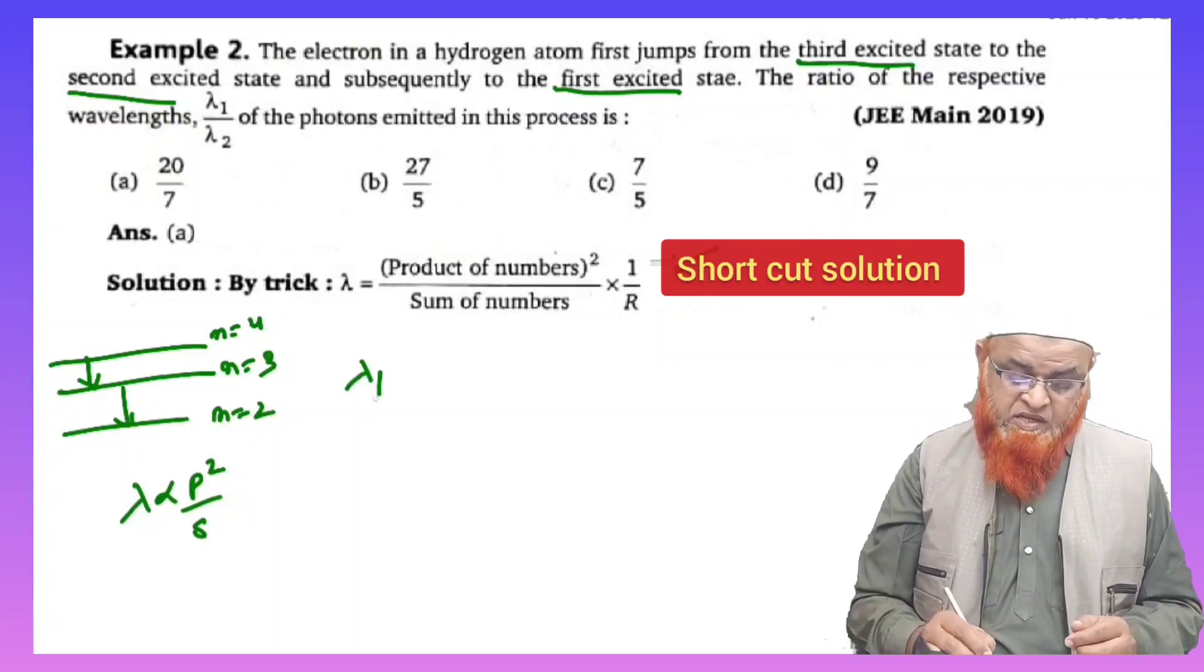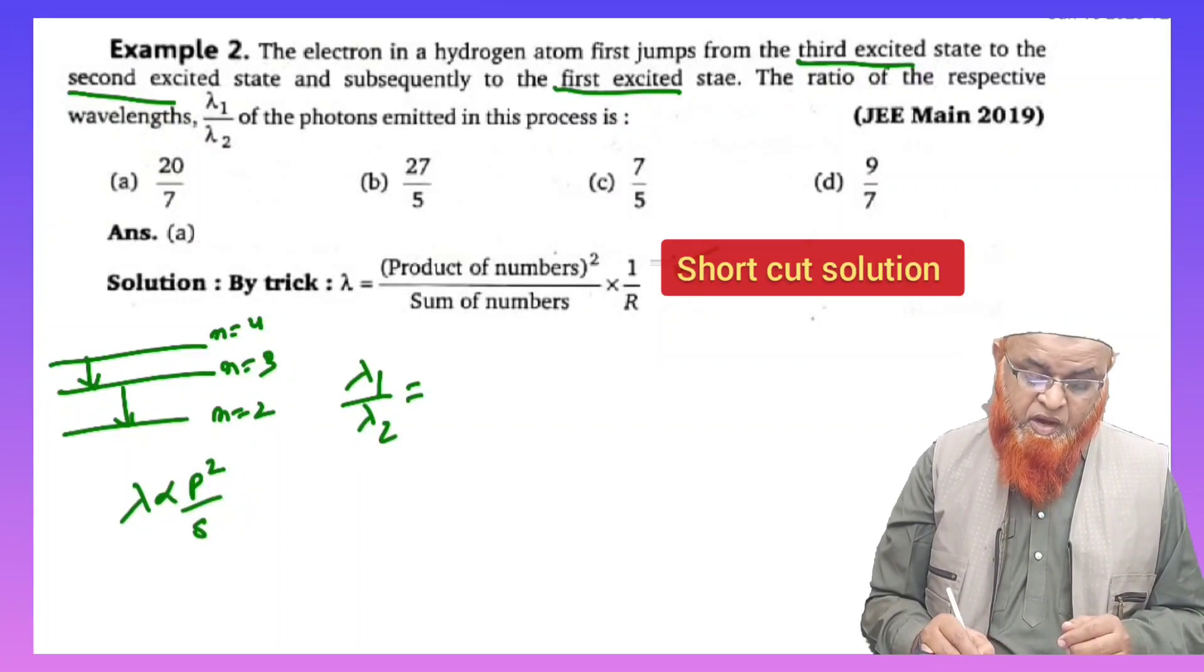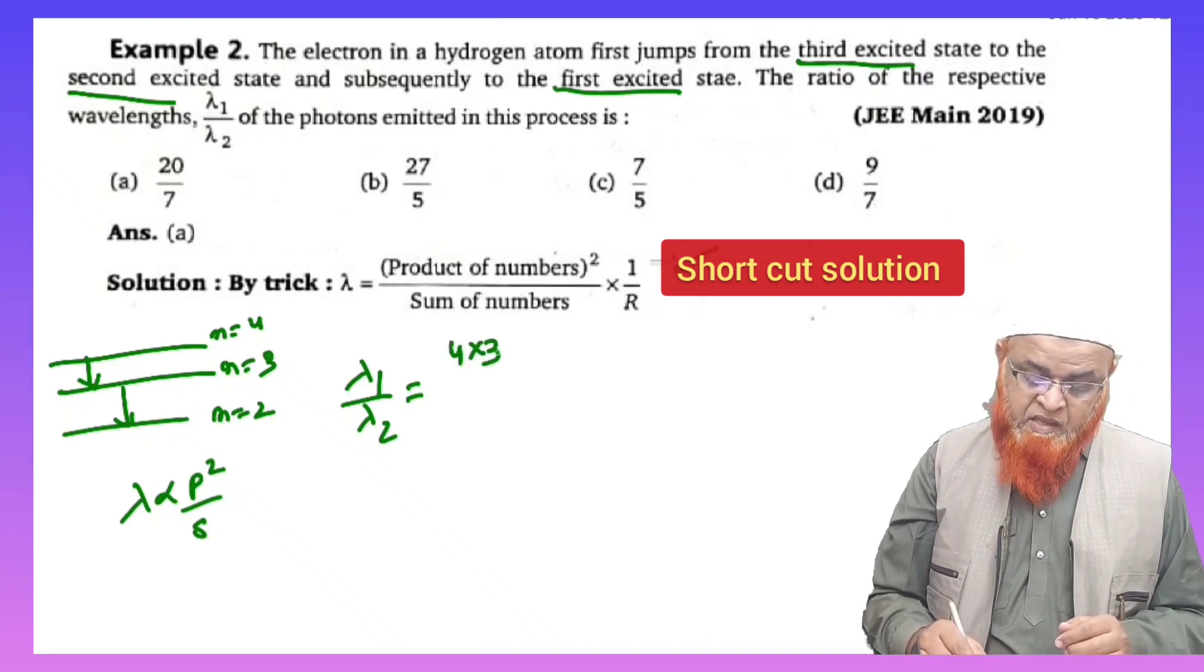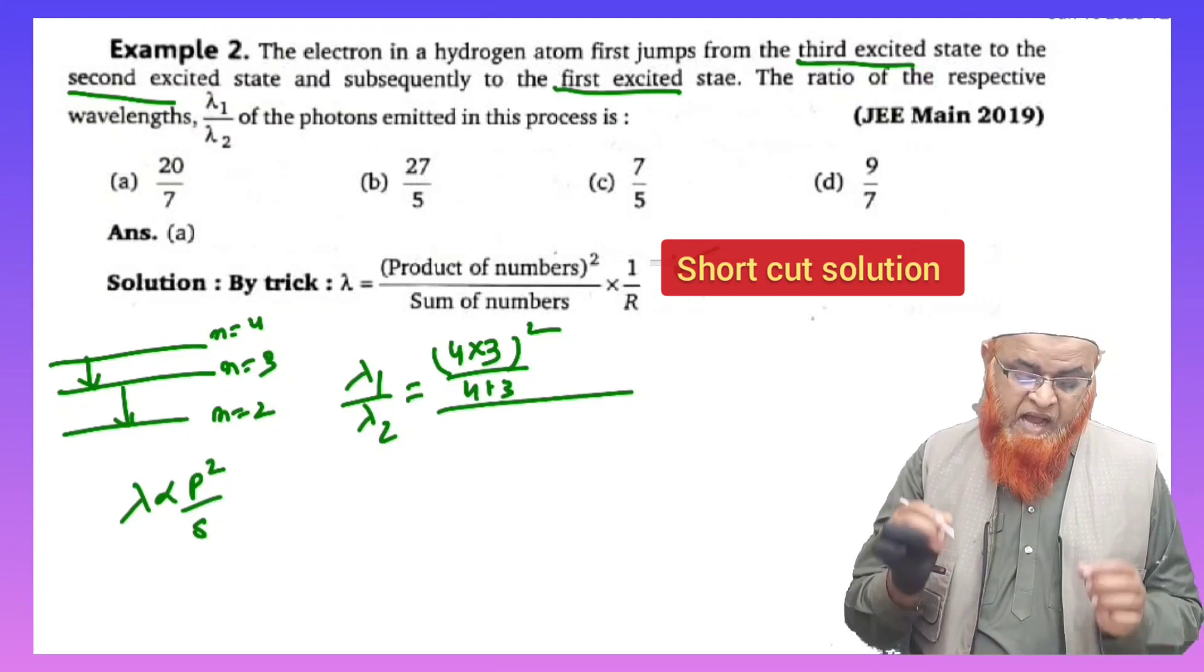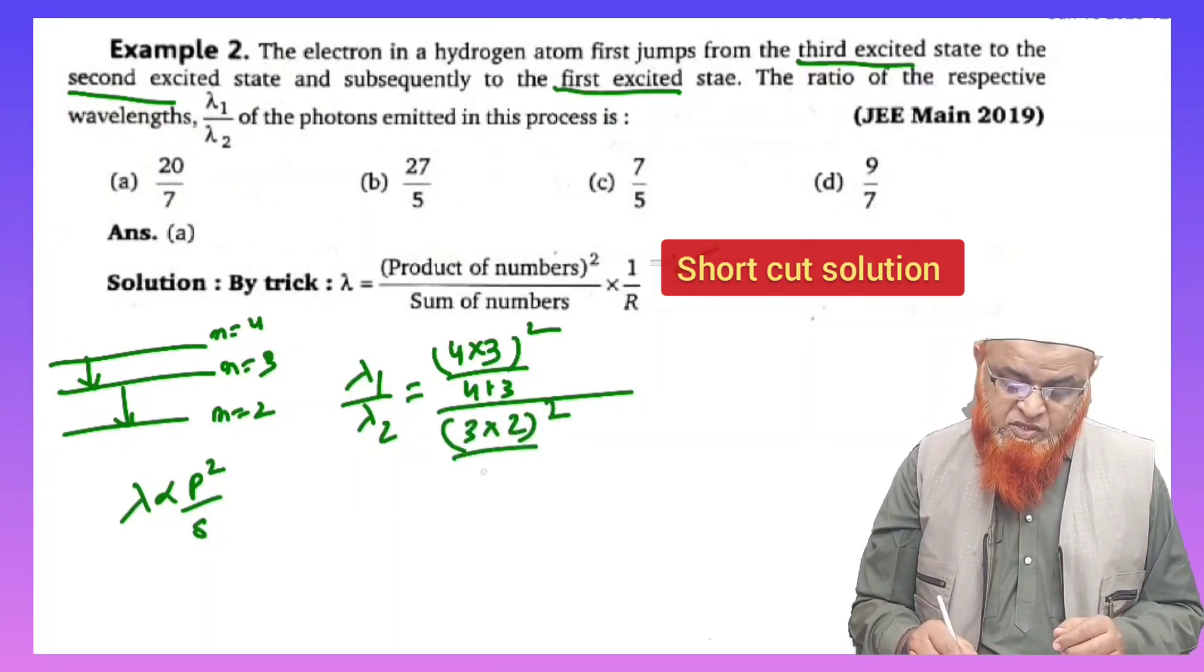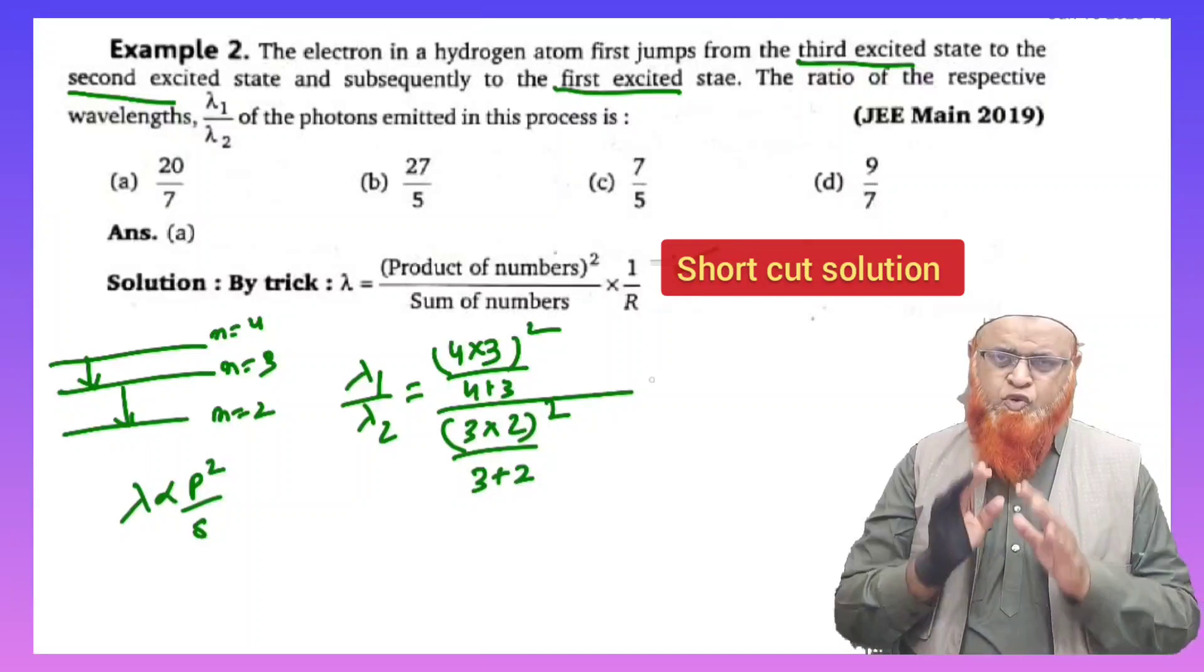You can write lambda 1 by lambda 2 equals product whole square means transition takes place from 4 to 3, that is 4 into 3 whole square divided by sum that is 4 plus 3, divided by the next subsequent transition, 3 into 2 whole square by 3 plus 2. So it is just product whole square by sum.